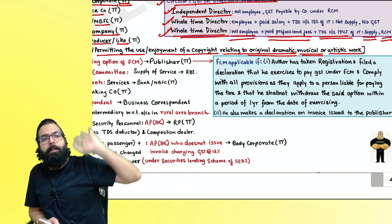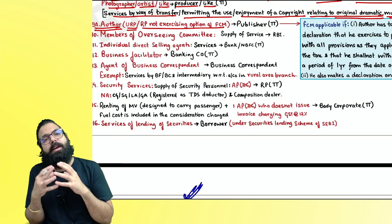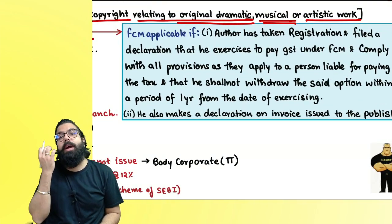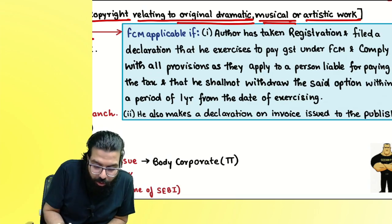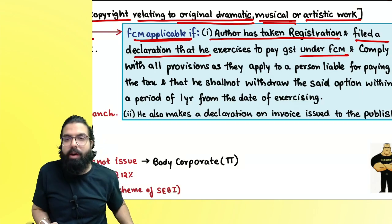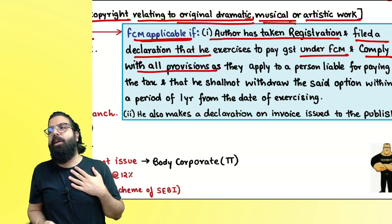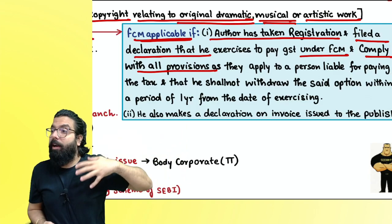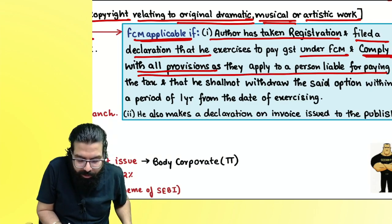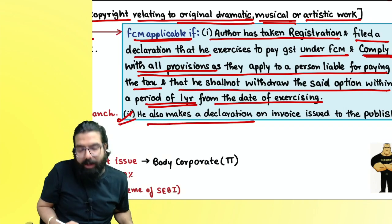An author who is unregistered or has not exercised the option to pay GST under forward charge — the publisher in the taxable territory pays GST under RCM. But an author can opt for forward charge. To do so, the author must: take registration, file a declaration with the jurisdictional officer stating they will pay GST under forward charge and comply with all GST provisions as they apply to the publisher, raise invoices, collect and pay GST. The author cannot withdraw this option for one year from the date of exercising, and must make a declaration on the invoice to the publisher.